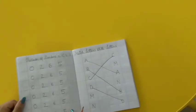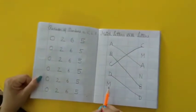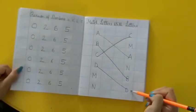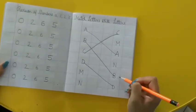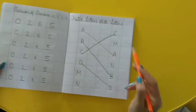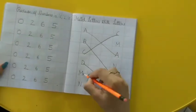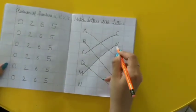D ko D ke saath match karenge. Now M. M kithar hai, doonndo? Yeh M hai? Nai, yeh toh D hai. Toh M kaho chukke baithi hai? Doonndo toh? Yeh ra hai. M ko M ke saath match karenge.